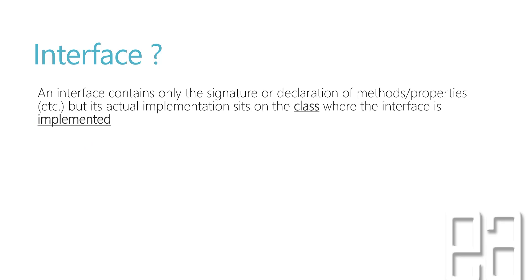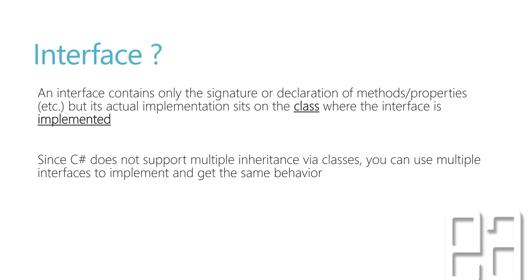An interface contains only the signature or the declaration of methods or properties, but its actual implementation sits on the class where the interface is being implemented. Since C# does not support multiple inheritance via classes, you can use multiple interfaces to implement and get the same behavior.